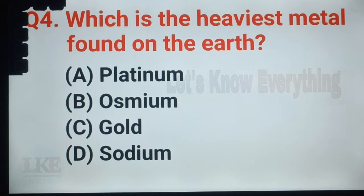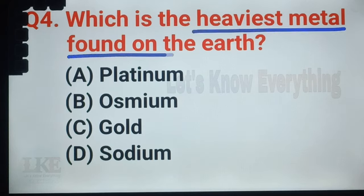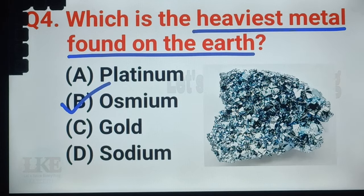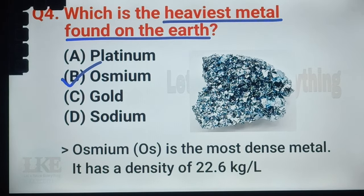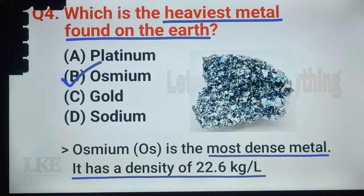Question number 23: which is the heaviest metal found on the earth? A. Platinum, B. Osmium, C. Gold, D. Sodium. Right answer: option B, Osmium. Osmium is the most dense metal. It has a density of 22.6 kg per liter.